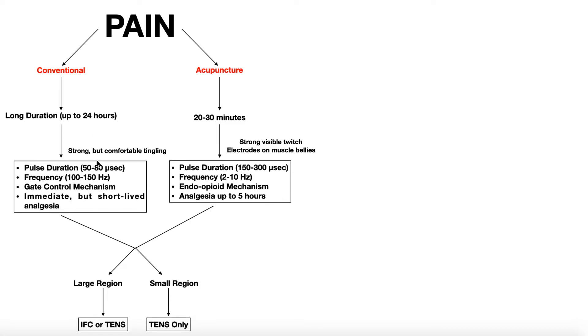The conventional one is not supposed to be uncomfortable. It's supposed to be a strong but comfortable tingling. You do not have to put the electrodes over muscle bellies for the conventional setting. Also remember, the conventional setting is immediate pain relief, but it only exists as long as you're using that machine. As soon as you turn it off, the pain relief's gone. For acupuncture, after the treatment's over, after the discomfort's over, you can have pain relief for hours, up to about five hours after the treatment is complete.